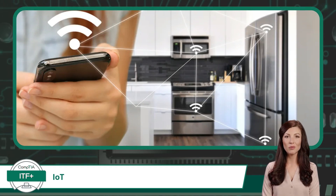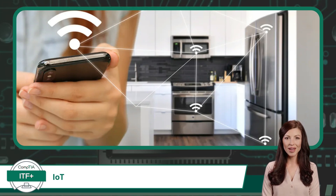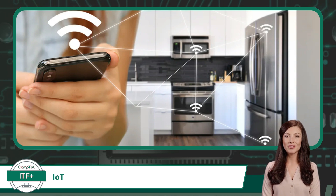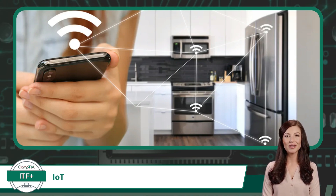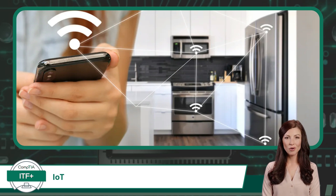IoT devices have transformed the functionality of home appliances, including refrigerators, ovens, microwaves, washers, and dryers, making our lives more convenient and efficient. Smart refrigerators can track food items, their expiry dates, and even suggest recipes based on available ingredients. Ovens and microwaves equipped with IoT capabilities allow remote control and monitoring through smartphone apps, enabling users to preheat, adjust cooking settings, and receive notifications when meals are ready. IoT-enabled washers and dryers offer remote control and scheduling options, allowing users to start or pause cycles and receive alerts when clothes are ready for the next step.